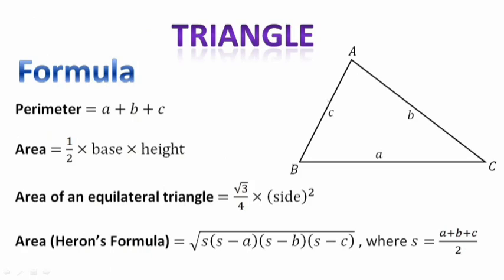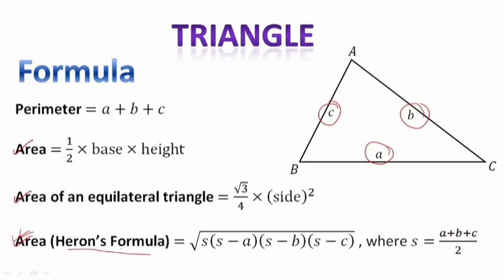There is a triangle ABC you can see. From this triangle ABC, these represent sides A, B, and C. When you have A, B, and C and you are asked to find the area, there are three area formulas. If we search for a formula where A, B, and C are used, we have A, B, and C used in the third formula which is called Heron's formula. So we will be applying Heron's formula.